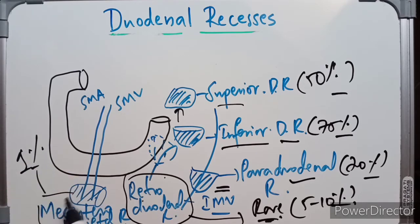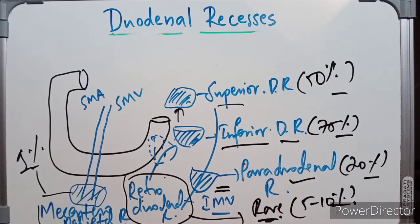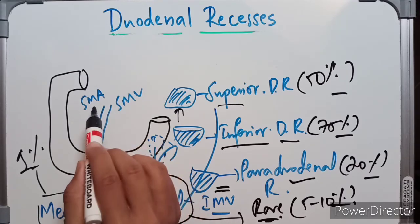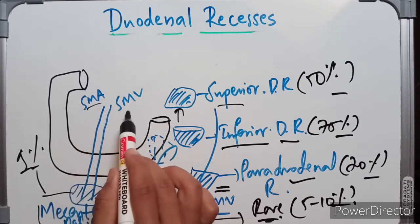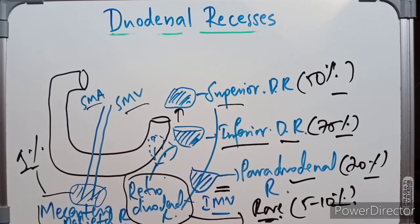The mesenteroparietal recess is found in only about 1% of individuals. It lies below the duodenum, behind the upper part of the mesentery. The superior mesenteric vessels — the superior mesenteric artery and superior mesenteric vein — lie in the anterior wall of the opening of the mesenteroparietal recess.